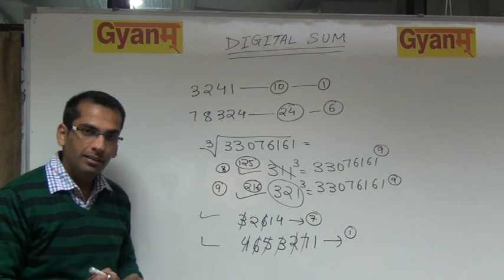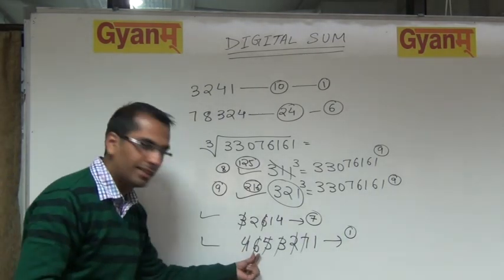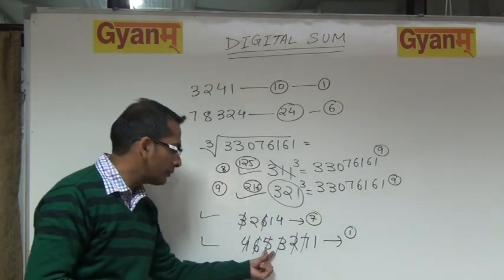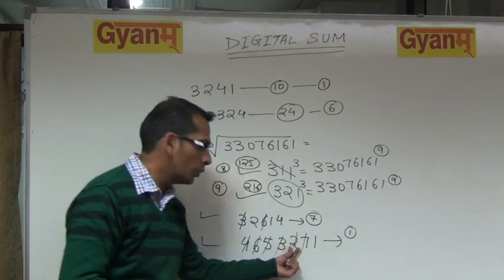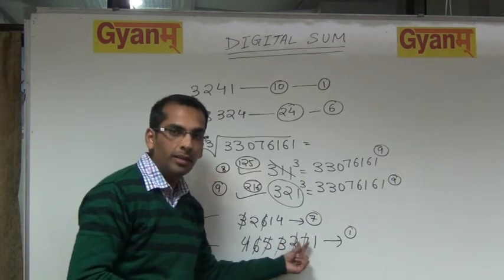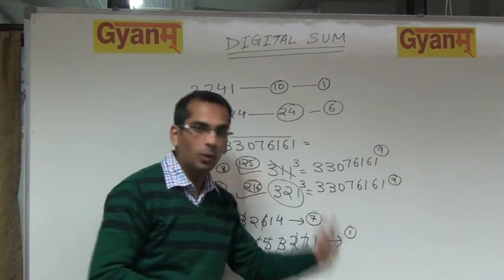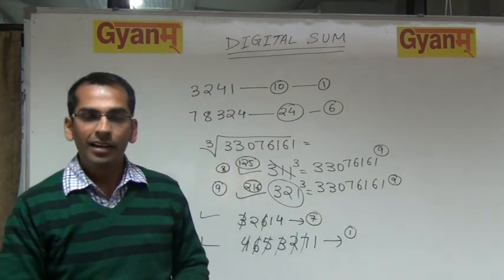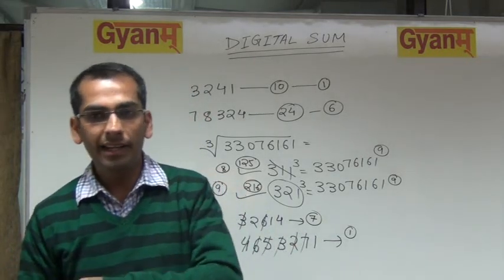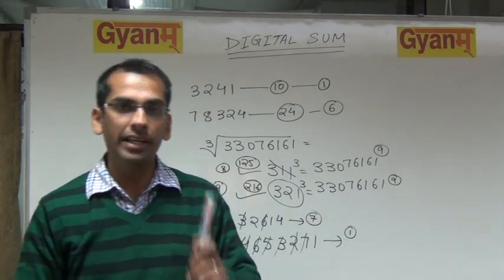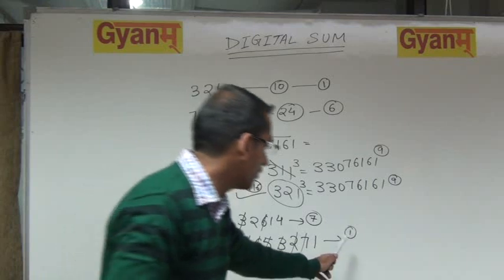You can check it. 4 plus 6 is 10, plus 5 is 15, plus 3 is 18, plus 2 is 20, plus 7 is 27, plus 1 is 28. And the digital sum of 28? 2 plus 8 is 10, and 1 plus 0 is 1. Confirmed.